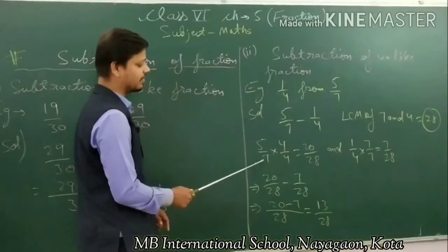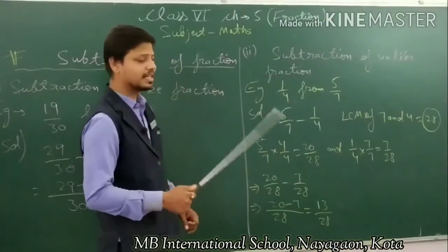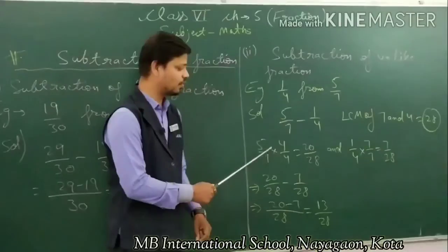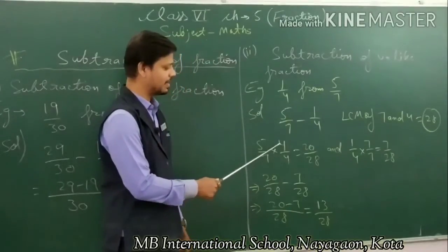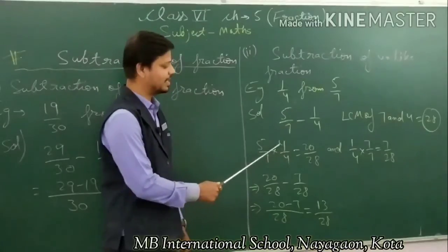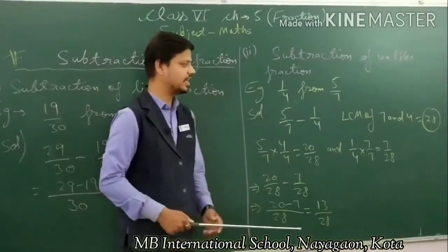Now the first fraction is 5 upon 7. Multiply by 4 and divide by 4. 5 multiplied by 4 is 20, and 7 multiplied by 4 is 28.